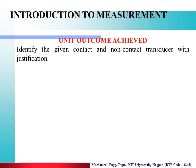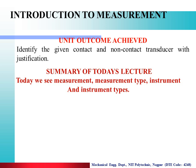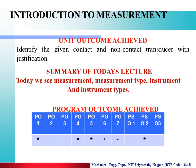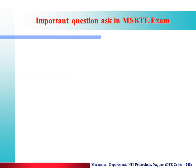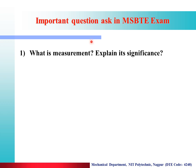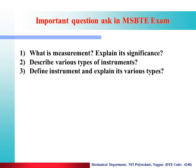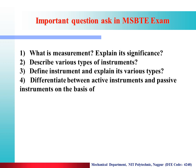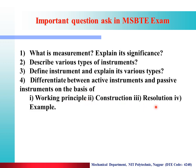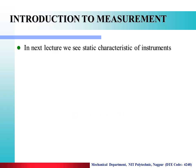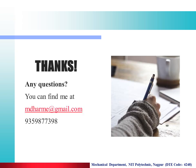The unit outcome achieved in today's lecture: identifying contact and non-contact type transducers with justification. Summary of today's lecture: we covered measurement, measurement types, instruments, and various instrument types. Program outcomes achieved: CO1, CO4, CO5, CO6, CO7, and program specific outcome ESO2. Important exam questions include: What is measurement and explain its significance (4 marks)? Describe the various types of instruments. Differentiate between active and passive instruments based on working principle, construction, and resolution. In the next lecture we see the static characteristics of instruments. Thanks — for any query, contact at the number provided.